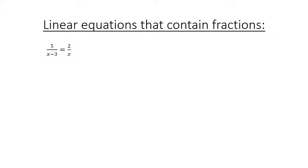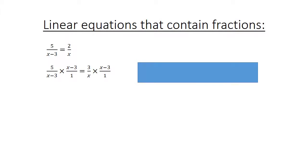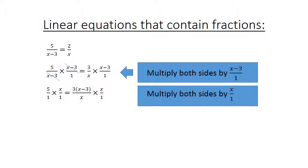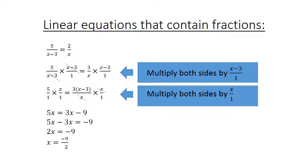Let's look at another example: 5 divided by x minus 3 equals 2 over x. Again, we multiply both sides by x minus 3 over 1. Since x minus 3 divided by x minus 3 equals 1, and we also multiply both sides by x over 1, x divided by x equals 1. We have 5 times x equals 5x, and 3 in brackets times x is 3x, and 3 times negative 3 is negative 9. So 5x minus 3x equals negative 9, giving 2x equals negative 9, and x equals negative 9 over 2, which equals negative 4 and a half.